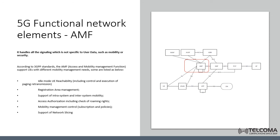The AMF also handles access authorization including check of roaming rights, and mobility management control. As you can see, the AMF network function is connected to many other network functions like the SMF, the AUSF, the RAN, the user equipment, and the NSSF.